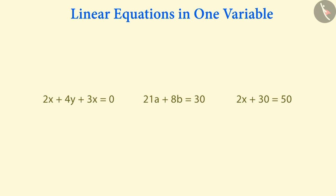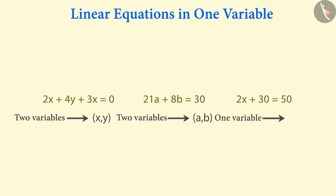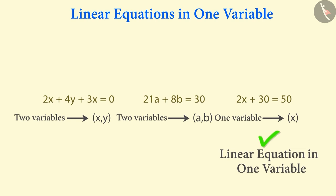The first equation has two variables, x and y. Similarly, the second equation contains two variables, a and b. But our last equation has only one variable, which is x. Therefore, only this equation can be called a linear equation in one variable.